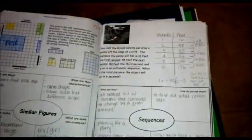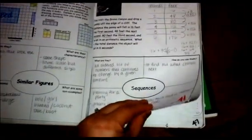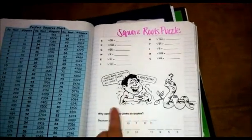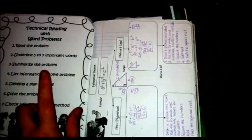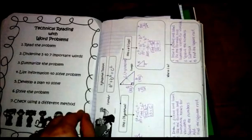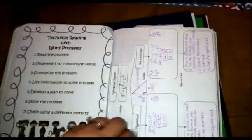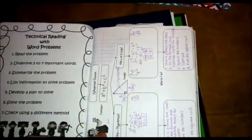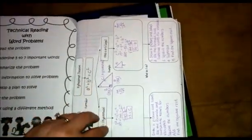And so, indirect measurement, similar figures, sequences, square roots and irrational numbers, which that's when we added in our perfect squares chart. This was an extra credit assignment for them. And this, I'm now teaching earlier in the year, the technical reading strategies with word problems that our school district has wanted us to do. This poster is in my TPT store. All of this stuff is in my TPT store, if I created it.